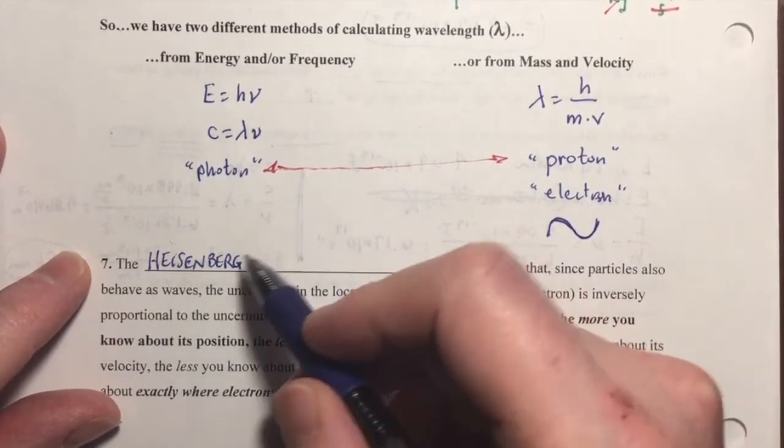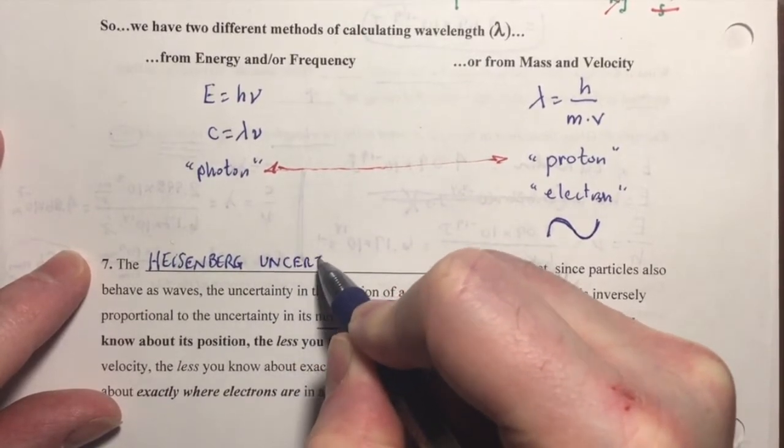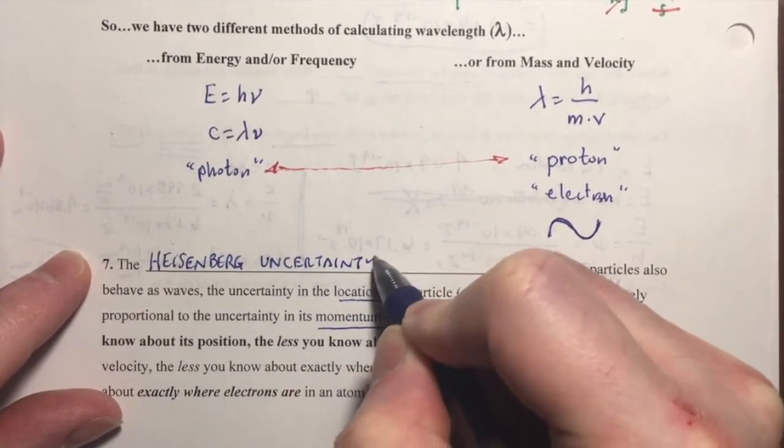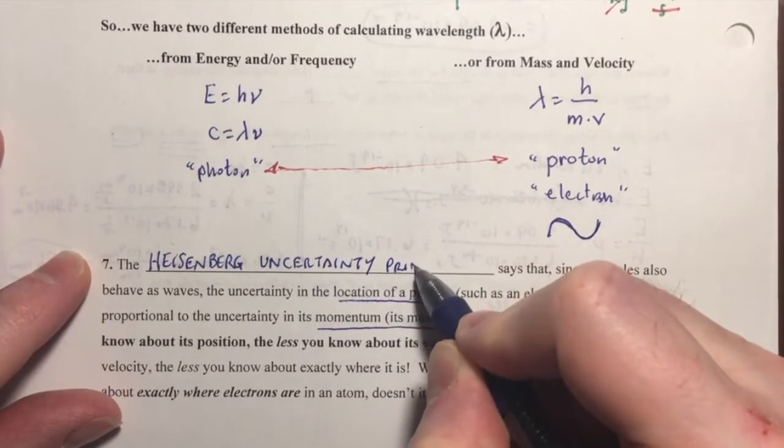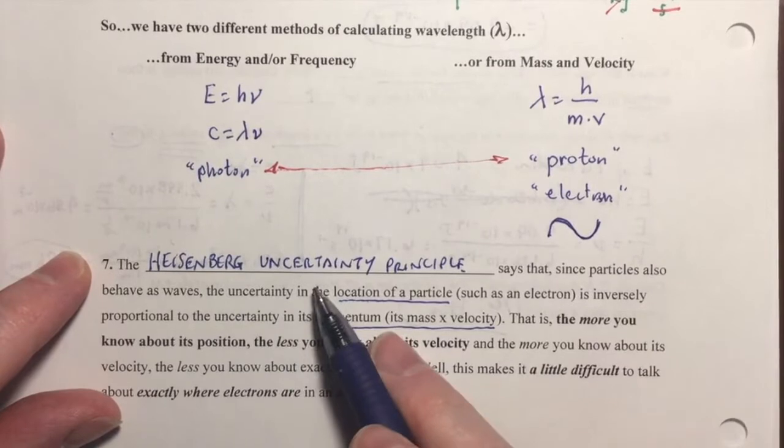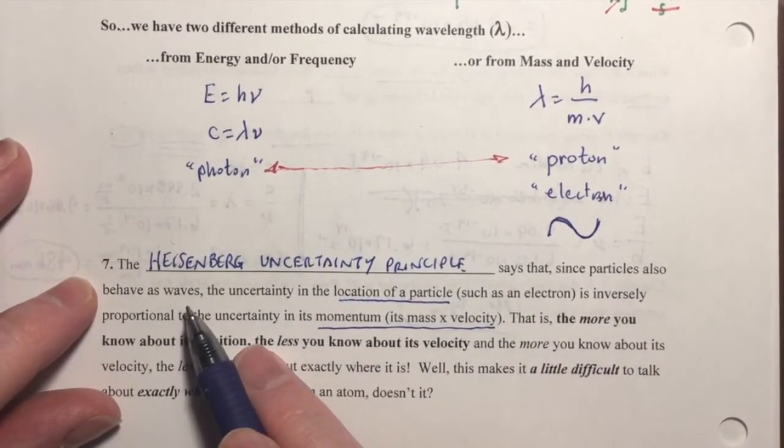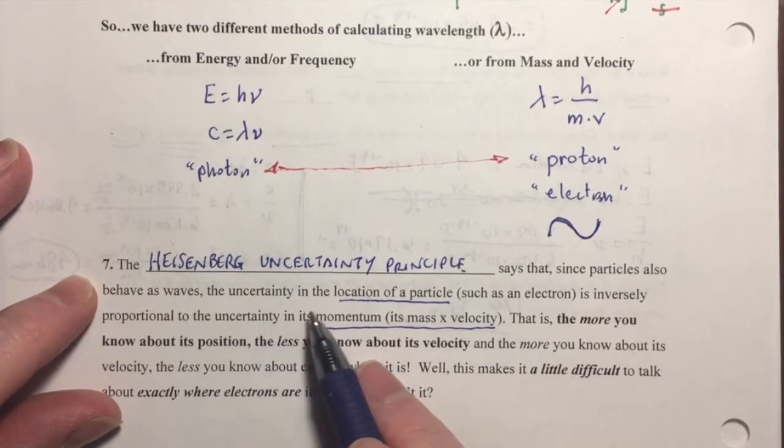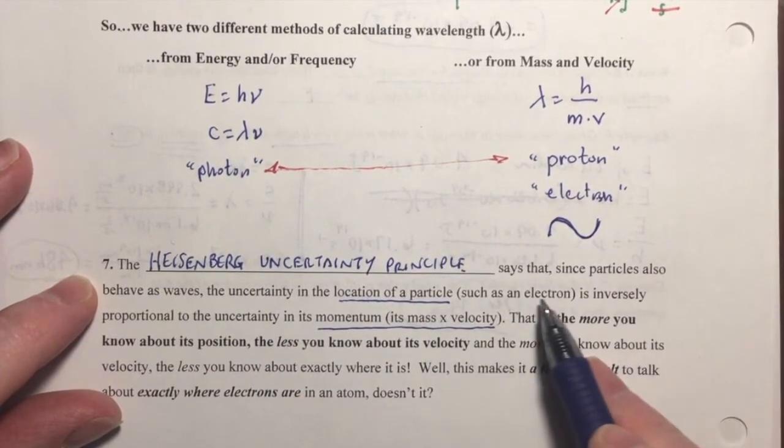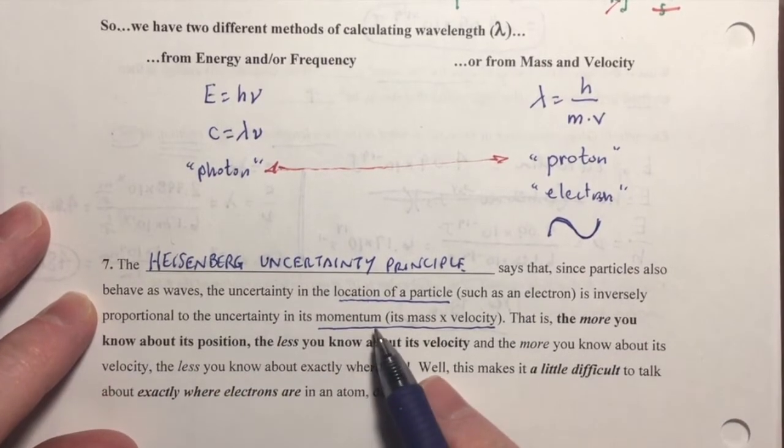So, there was fundamentally an inverse relationship in the certainty of those two things, in knowing the location of the electron, and knowing its momentum, its mass times velocity. And so, he came up with what's called the Heisenberg uncertainty principle.